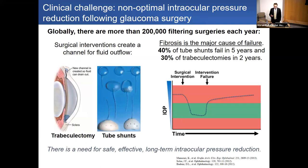The primary option for these patients has traditionally been filtering surgeries, which can provide effective and sustained IOP reduction but come with significant limitations: post-operative hypotony, long recovery times, and over the long term, failure due to fibrosis around the filtering bleb or plate. This can lead to elevated IOP returning to unsafe levels and disease progression.